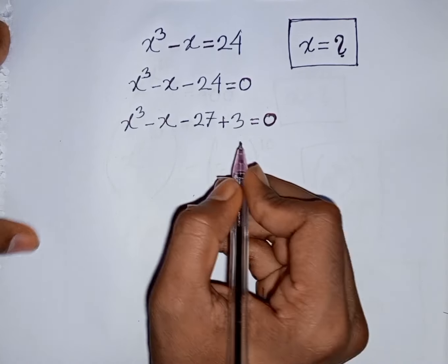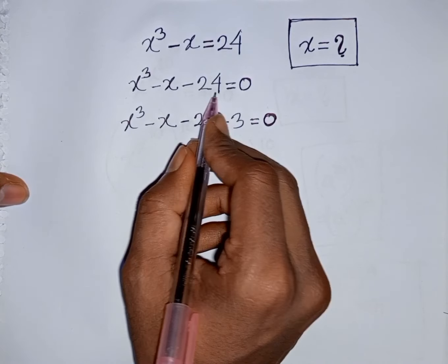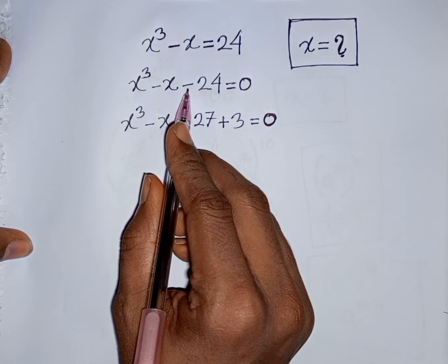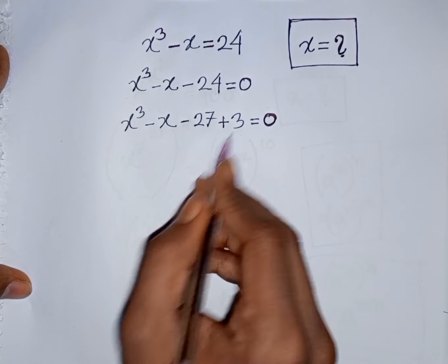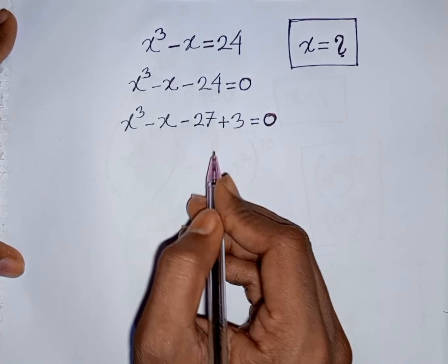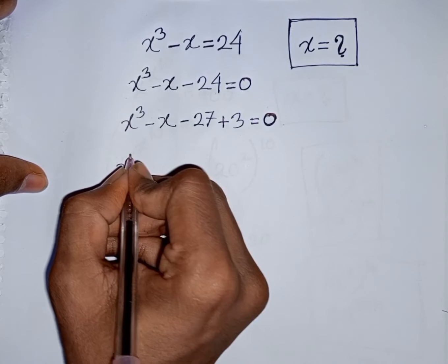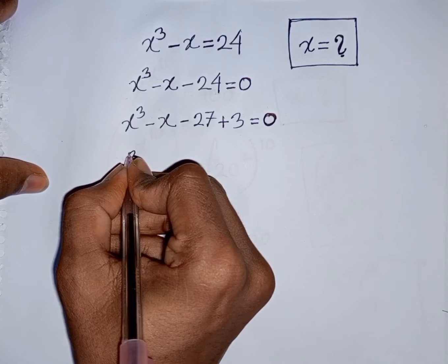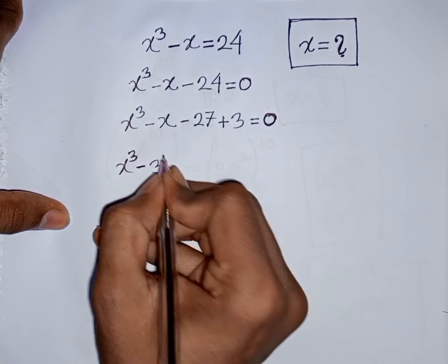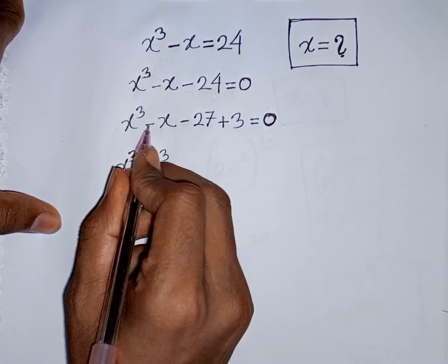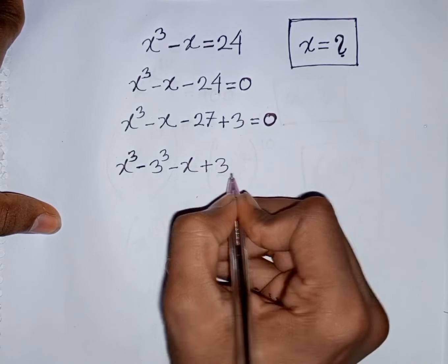How to understand this? Pay attention here. The nearest cubic number of 24 is 27. So you can write minus 24 as minus 27 plus 3. We have x cube minus 27, which is the same as minus 3 cube, then minus x plus 3 is equal to 0.